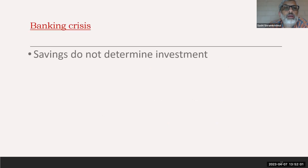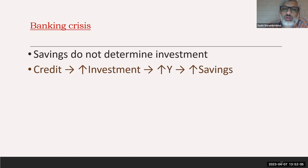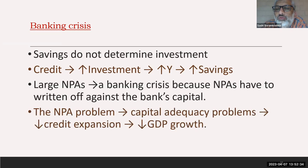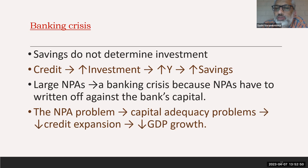Today it's not savings that determine investment, but credit. Banks create money in order to accommodate investment spending, which then drives incomes and gives rise to savings. Credit has to come before production happens and before incomes are generated. Banking crises are very dangerous because credit flows are what accommodate investment. When people don't repay loans, there's stress for banks — and a banking crisis is serious precisely because it disrupts the credit that drives economic activity.